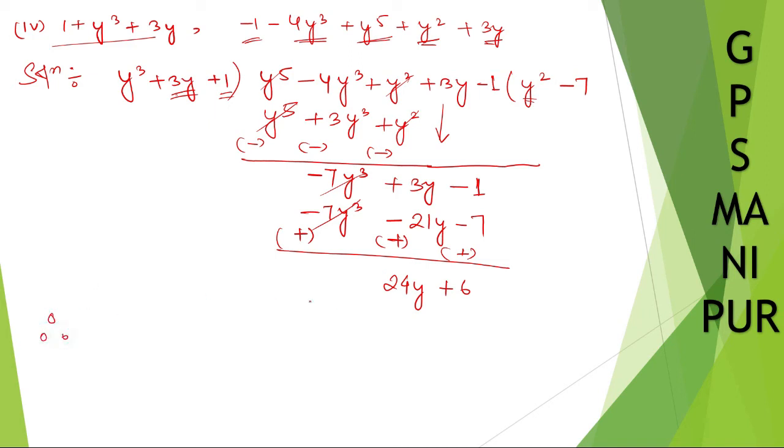Therefore, remainder is there, right? Since remainder is equal to 24y plus 6 which is not equal to 0 therefore, first polynomial, write down completely, first polynomial is not a factor, not a factor of the second polynomial.